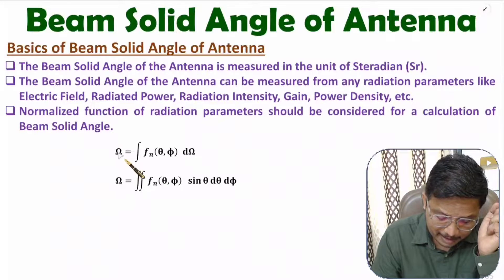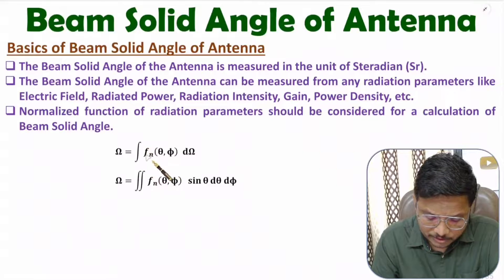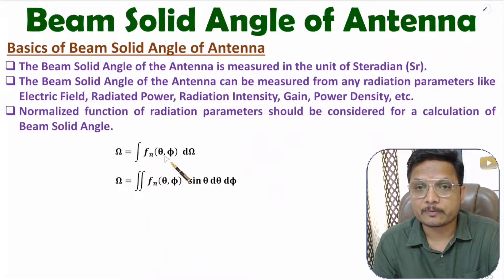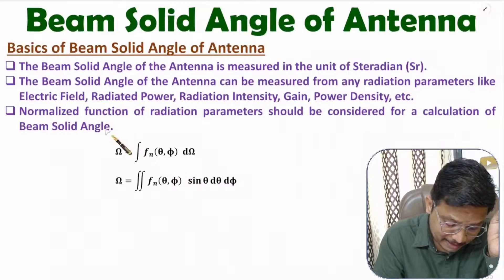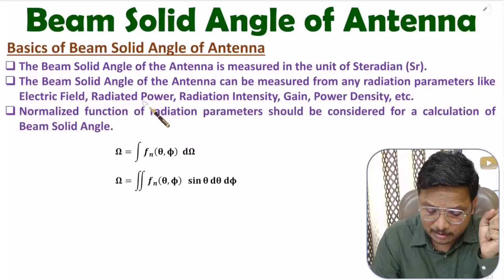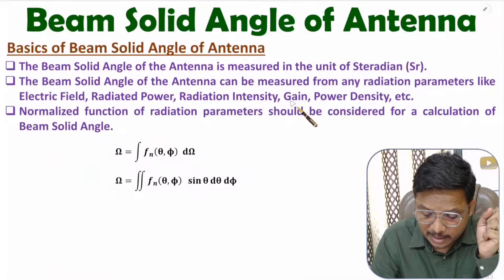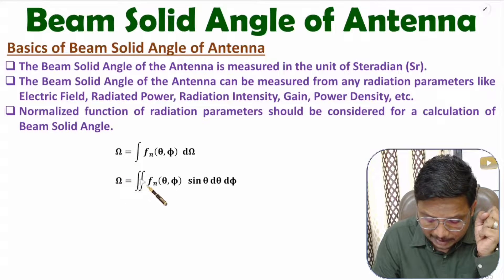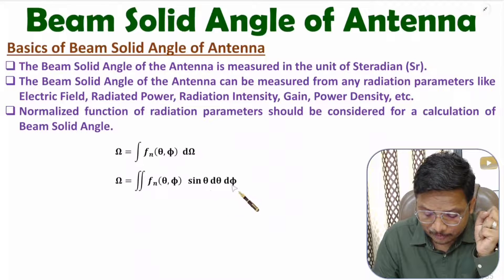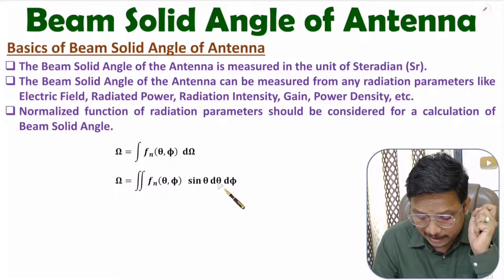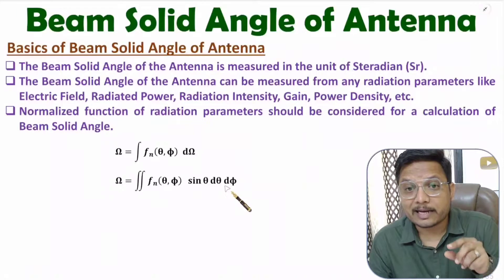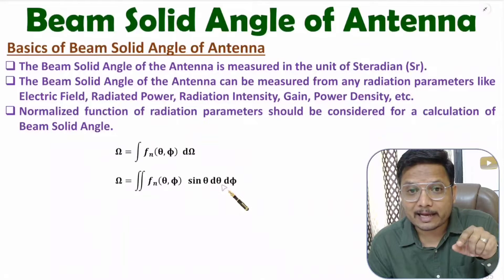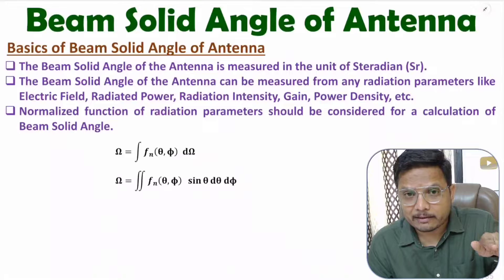If you want to calculate beam solid angle, you need to integrate a function with respect to solid angle. Whatever function we consider must be a normalized function. This function could be a function of electric field, radiated power, radiation intensity, gain, or power density. The solid angle integration is sin(θ) dθ dφ, where θ is the vertical angle — the angle with respect to the z-axis — and φ is the horizontal angle varying in the xy plane.